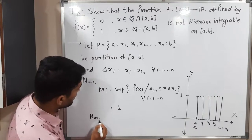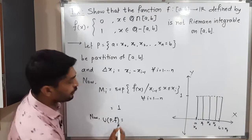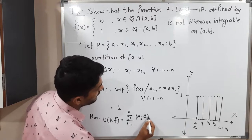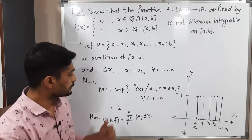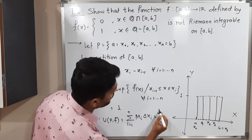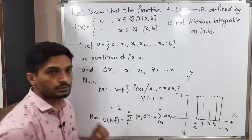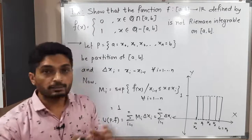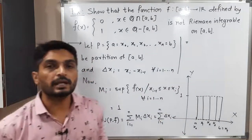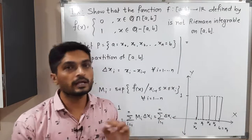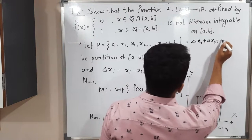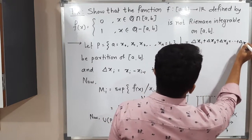Now we find the upper sum U(P,f). The formula is: U(P,f) = Σᵢ₌₁ⁿ M_i · Δx_i. Since M_i = 1, this becomes Σᵢ₌₁ⁿ Δx_i. Expanding the summation: Δx₁ + Δx₂ + Δx₃ + ... + Δxₙ, which equals (x₁ − x₀) + (x₂ − x₁) + (x₃ − x₂) + ... + (xₙ − x_{n−1}).